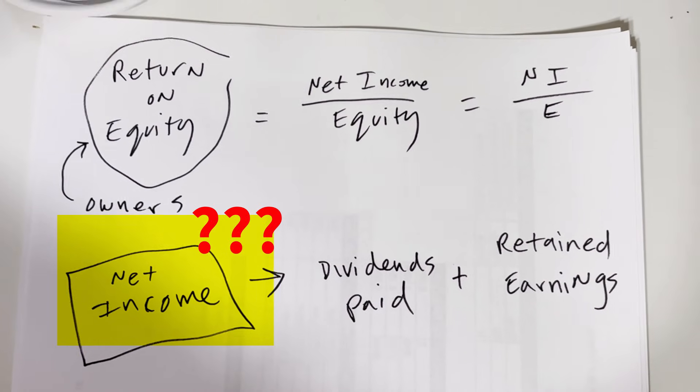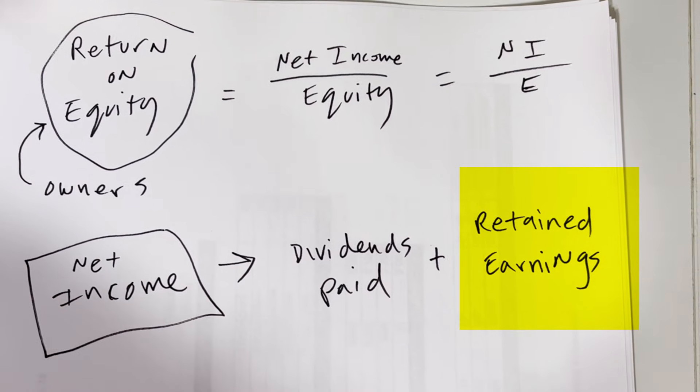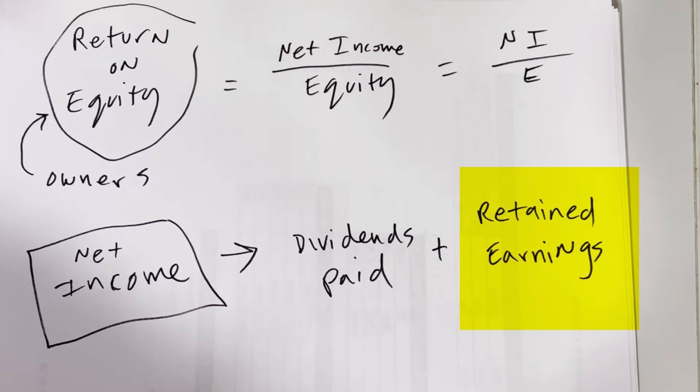What is net income? Well, it's either dividends paid out to the equity owners, or it's retained as earnings to plow back into the business.